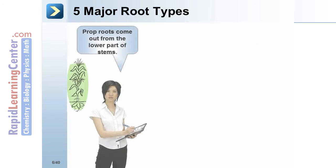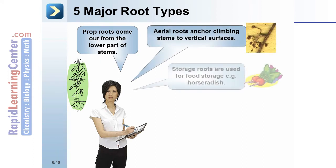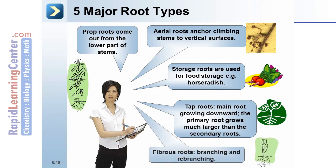Five major root types: prop roots come out from the lower parts of stems; aerial roots anchor climbing stems to vertical surfaces; storage roots are used for food storage, like horseradish; tap roots are the main roots growing downward, where the primary root grows much larger than the secondary roots; and fibrous roots involve branching and re-branching.